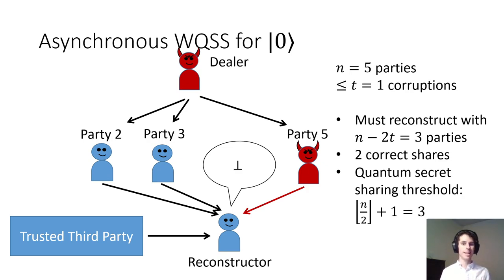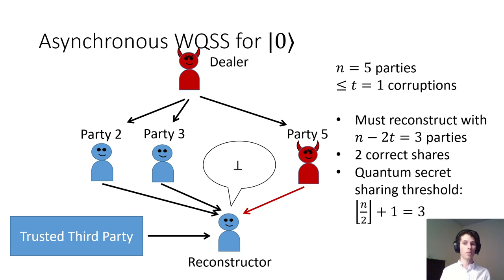In the classical setting, this issue is addressed by having every party sign the tested shares during the sharing phase. This would prevent the adversary from changing shares later, even if the dealer is dishonest. Unfortunately, quantum signatures are impossible.